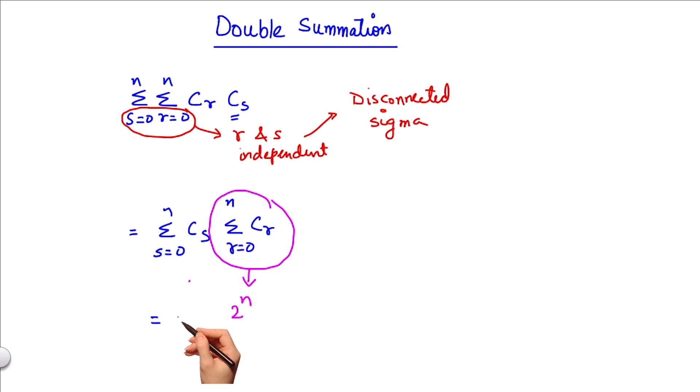So I am left with summation s from 0 to n c s. Since 2 to the power n is independent of s, I can write it outside the summation sign and get 2 to the power n c s, s varying from 0 to n.